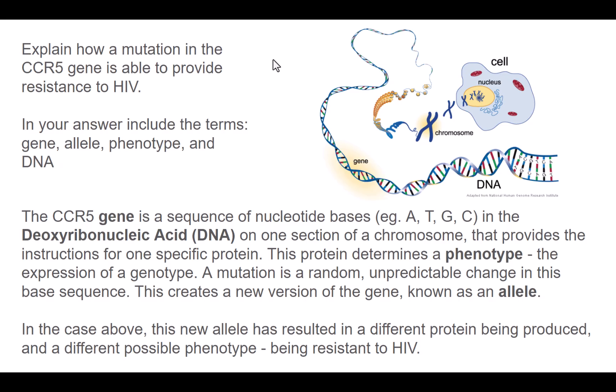To respond to the question, the CCR5 gene is a sequence of nucleotide bases in the deoxyribonucleic acid on one section of a chromosome that provides the instructions for one specific protein. This protein determines a phenotype — the expression of a genotype. A mutation is a random, unpredictable change in this base sequence, which creates a new version of the gene known as an allele. In the case above, this new allele has resulted in a different protein being produced and a different possible phenotype, i.e. being resistant to HIV.